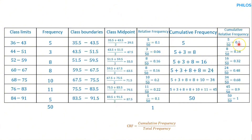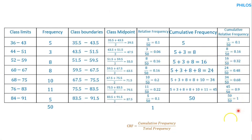The second method uses the relative frequencies directly. The first cumulative relative frequency equals the first relative frequency (0.1). For the second: add the relative frequency of the second class (0.06) to the previous (0.1) to get 0.16. For the third: 0.16 plus 0.06 plus 0.1 gives 0.32. Continuing this way for all classes gives the same answers.